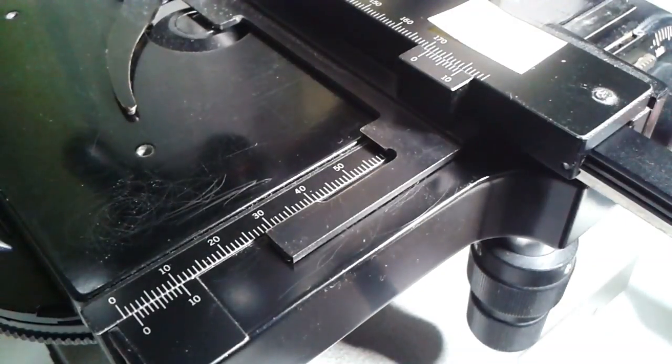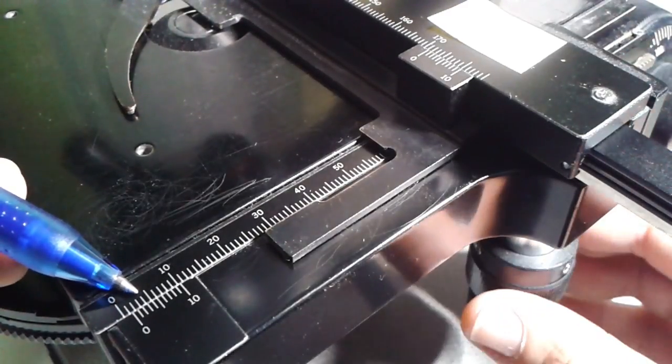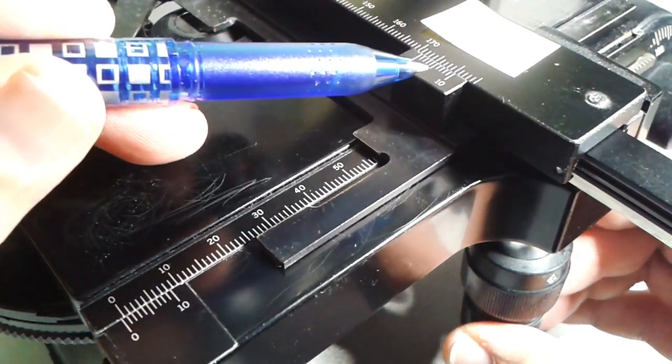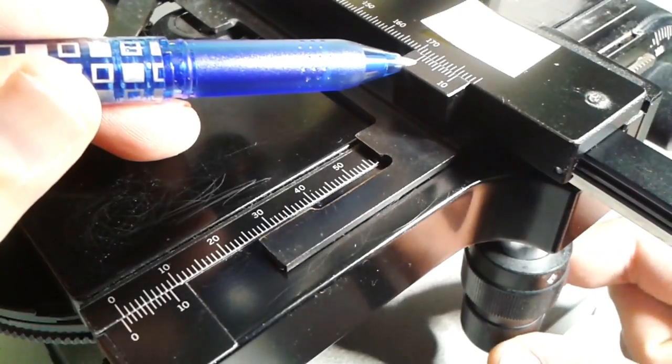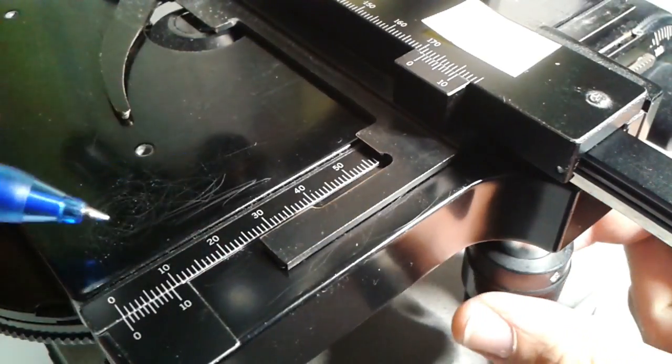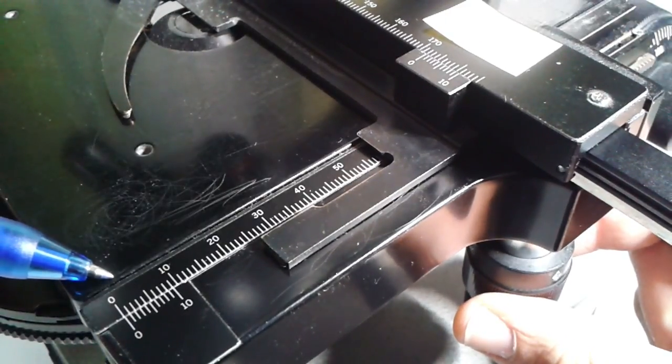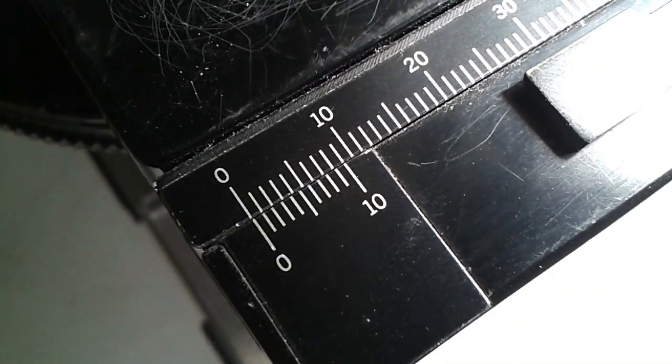So there are actually two stage calipers, one for the x-axis and one for the y-axis, and by moving the stage you can see that the small scale in this case also always moves in relation to the larger scale and this allows for a very precise positioning and also for measurement of certain things under the microscope.